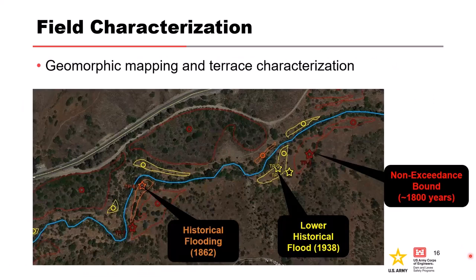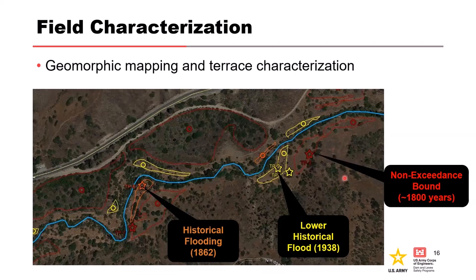Here's an example compilation of detailed mapping of terrace surfaces and sites considered and selected for investigation. This includes stratigraphy indicative of historical flooding at one terrace (the orange lines), a lower historic unit representative of larger historic floods (shown in yellow), and a non-exceedance bound at a higher and older terrace about 1,800 years ago (shown in red). Walking through: we have a historical flood at lower elevation in orange, a larger historical event in yellow, and landscape stability higher up in red. Evidence is collected on both sides of the stream and upstream and downstream of the reach, giving greater confidence than a single site.